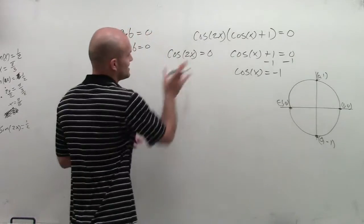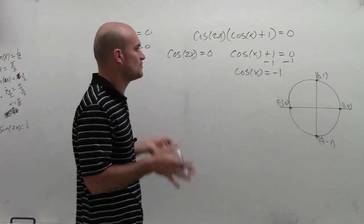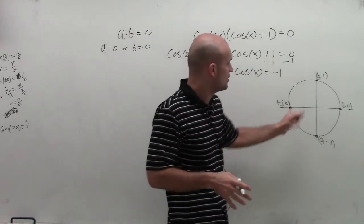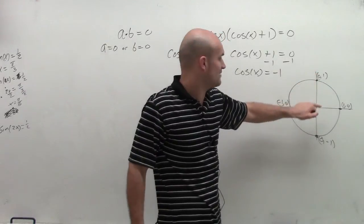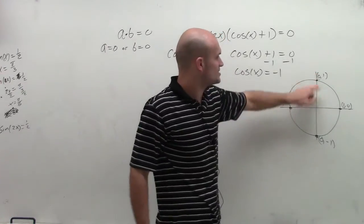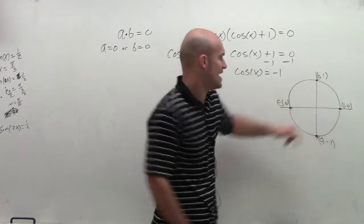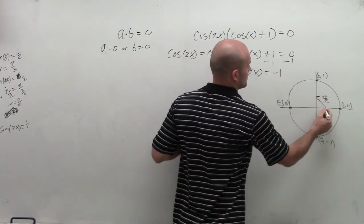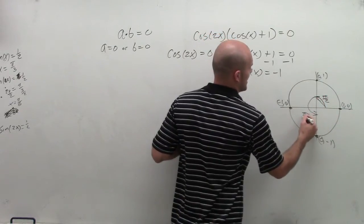So in the first one, we say when is cosine equal to 0? So that means when is my x value equal to 0? Well, we have two solutions, right? We have x is going to equal, or I'm sorry, our cosine value is equal to 0 at pi halves and 3 pi halves.